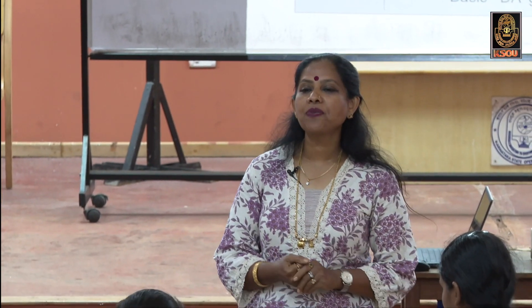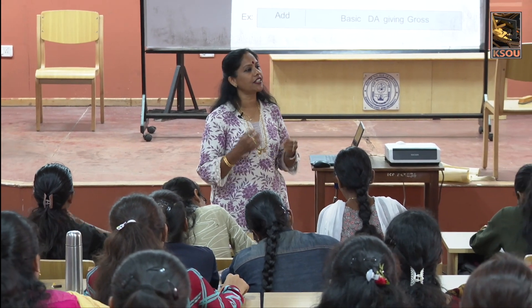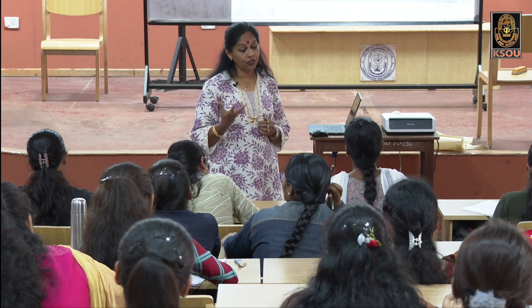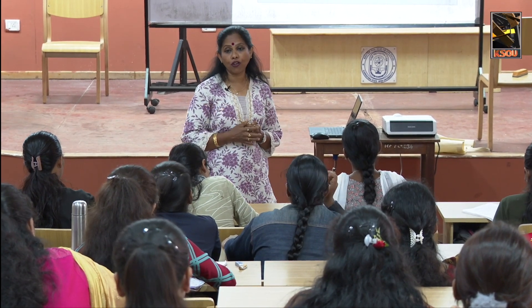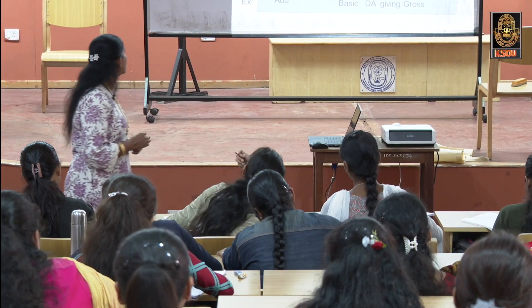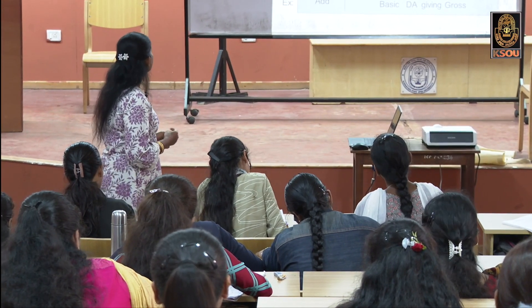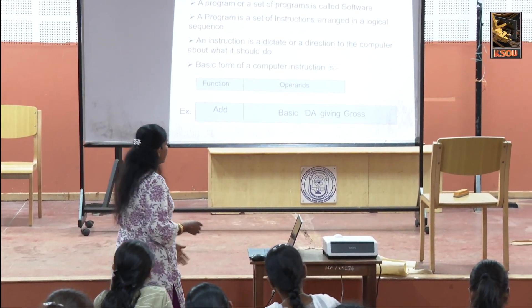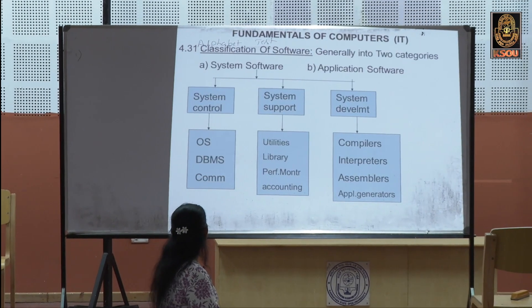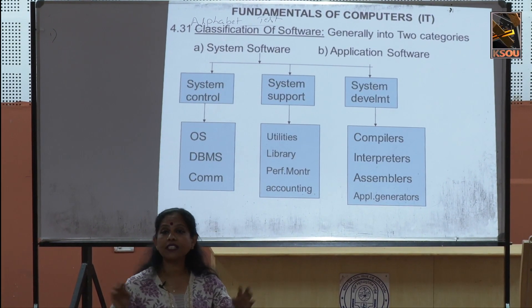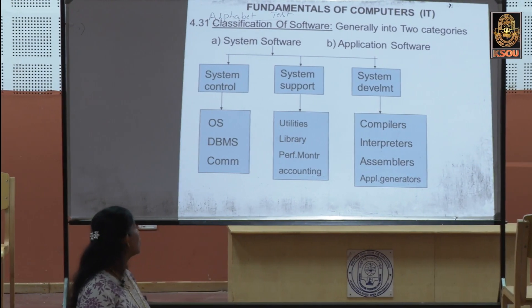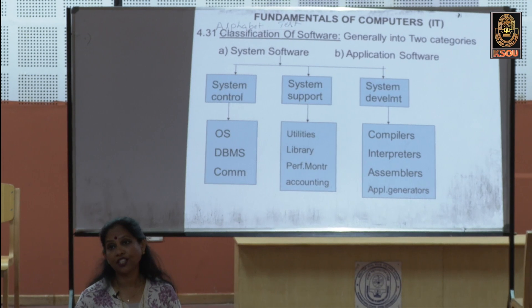Software is a set of instructions — it is a program. Your computer works with the help of software, which you cannot see. Software is classified into two types: system software and application software.